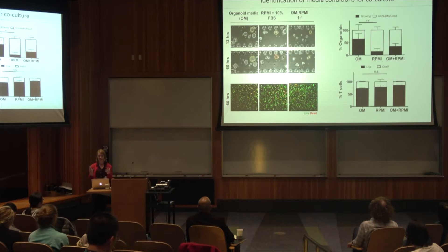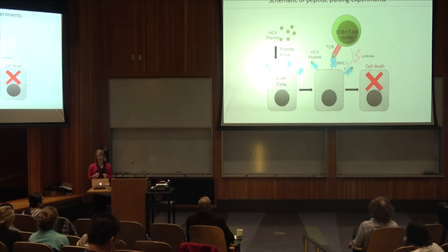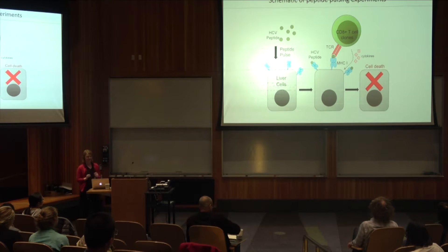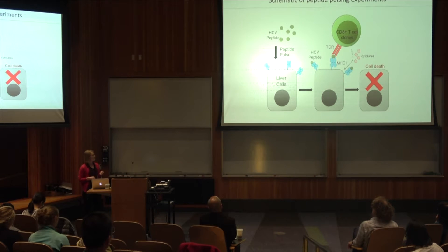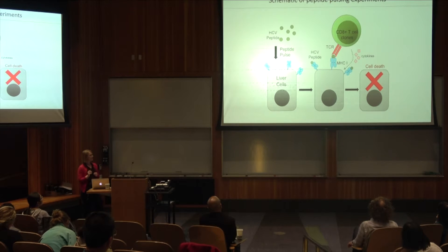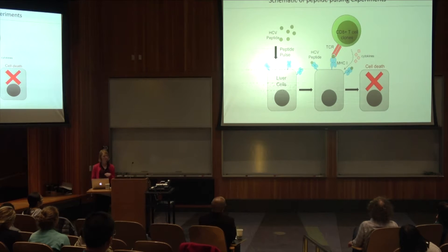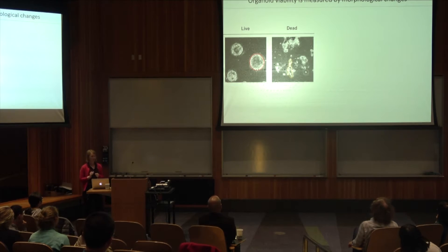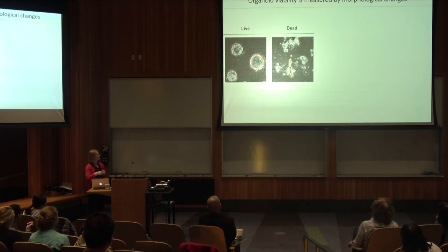We wanted to actually see if these T cells are able to recognize organoids and respond. To begin measuring function, we switched to a more artificial method where we take HCV peptide, peptide-pulse these liver cells, thereby knocking off all the endogenous peptides, and they get replaced with this HCV peptide. We then have CD8 T cell clones that are specific for this MHC allele and this HCV peptide — in theory they'll be able to recognize that and lead to cell death. We're measuring viability with the organoids based on morphological changes. In a live organoid it's a nice sphere, and as they die they begin to crumble apart and become very misshapen.